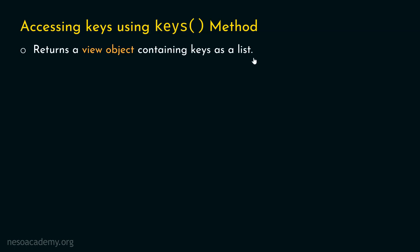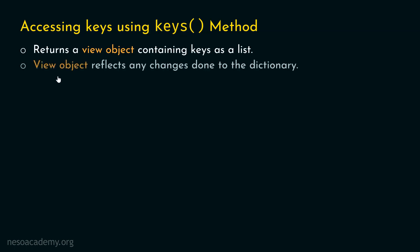What is this view object? A view object reflects any changes done to the dictionary. So if we make any changes to the dictionary, those changes will be reflected in the view object, allowing us to view the changes of the dictionary.